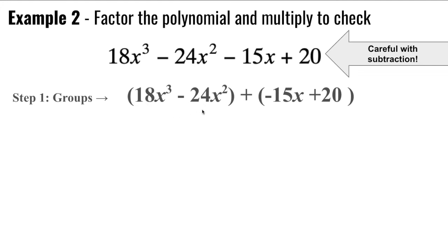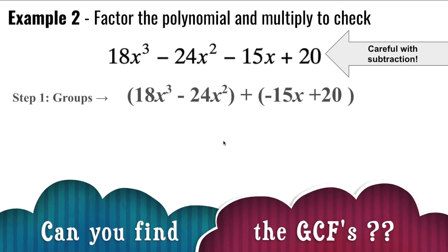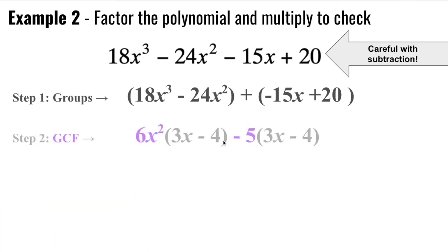Can you find the greatest common factor of each of these binomials? Let's see how you did. In the first binomial, I was able to factor out 6x squared, leaving me with 3x minus 4. In the second binomial, since the leading coefficient here is negative, I was able to factor out negative 5. And that left me again with 3x and minus 4 because 20 divided by negative 5 is negative 4.